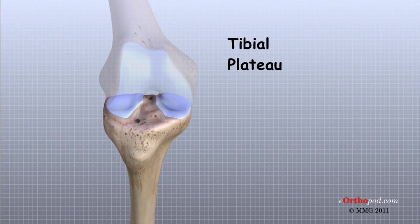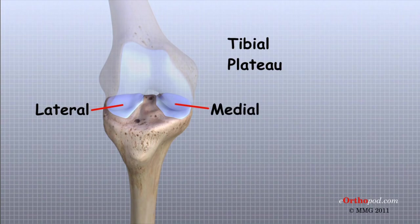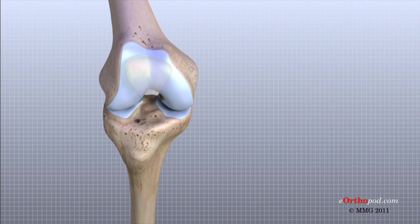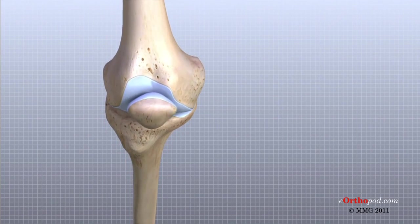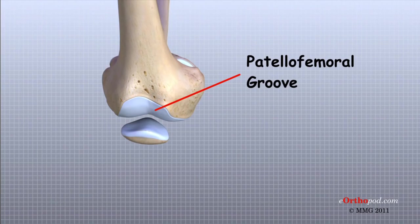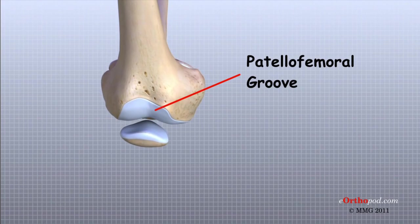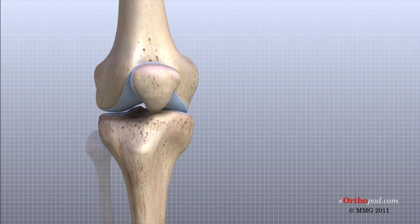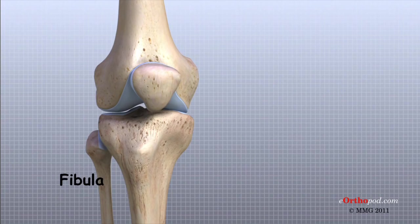This surface is called the tibial plateau. The outside half, farthest away from the other knee, is called the lateral tibial plateau, and the inside half, closest to the other knee, is called the medial tibial plateau. The patella glides through a special groove formed by the two femoral condyles called the patellofemoral groove. The smaller bone of the lower leg, the fibula, never really enters the knee joint. It does have a small joint that connects it to the side of the tibia, and this joint normally moves very little.